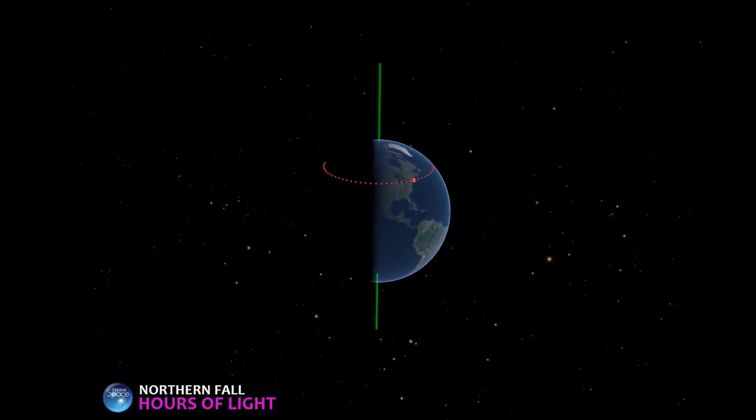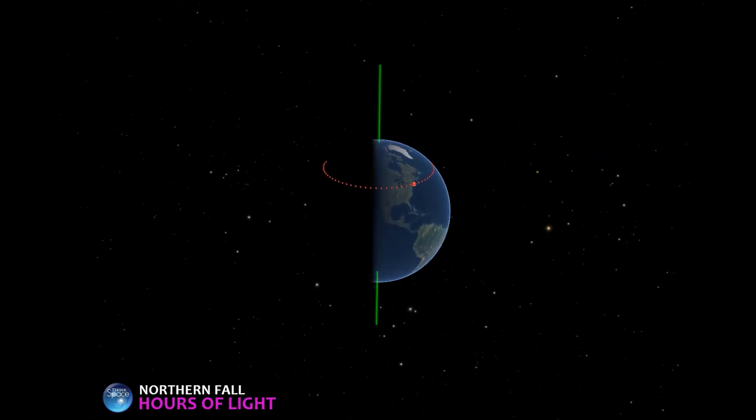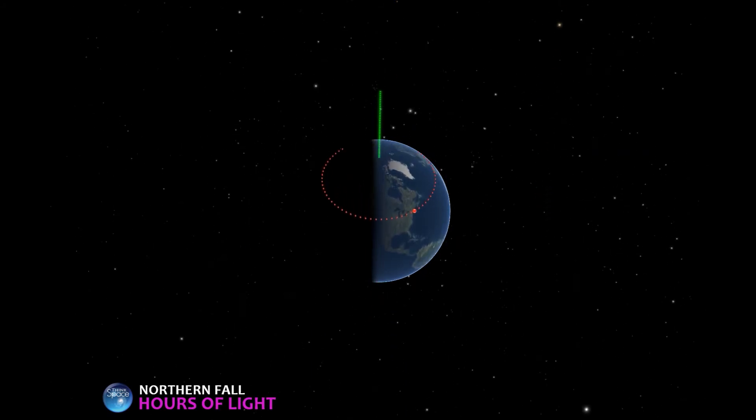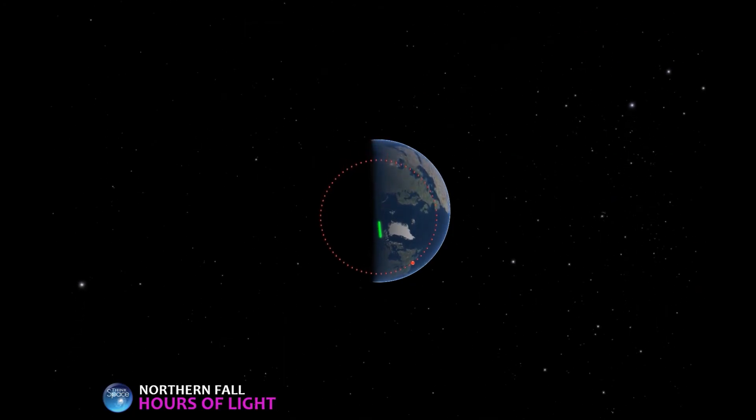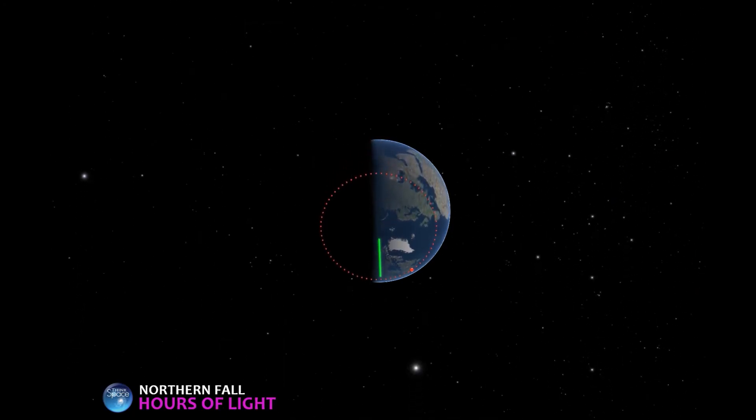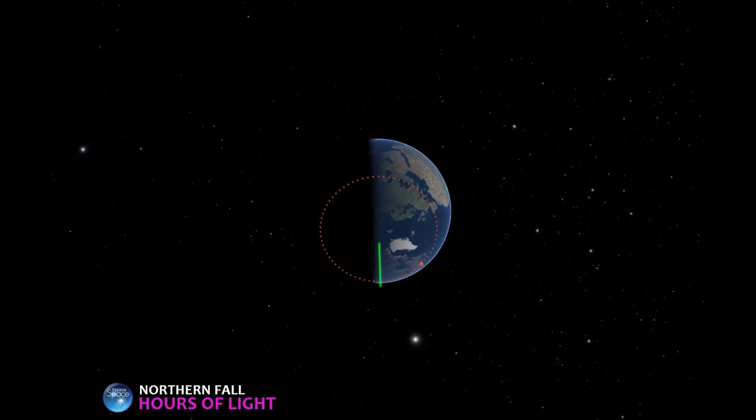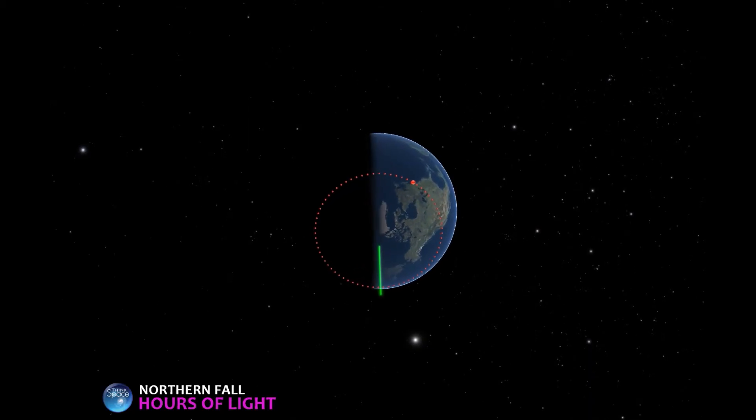So anyway, this is the fall Earth. Sunlight is coming from the right, and the axis is falling right along the terminator line. So if we look at this Earth from above, we'll see that the path through a day is evenly split. 12 hours in the sunlight, and 12 hours in the darkness.